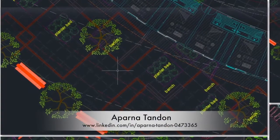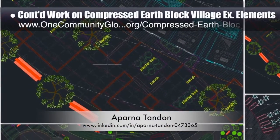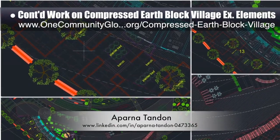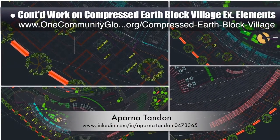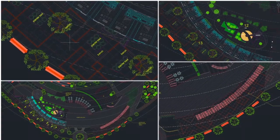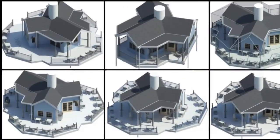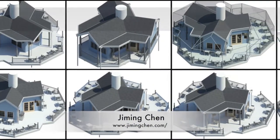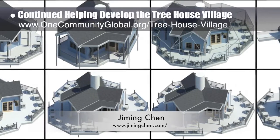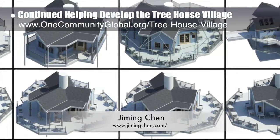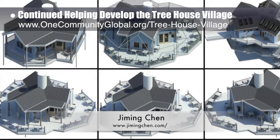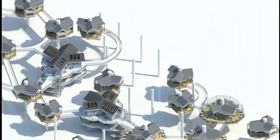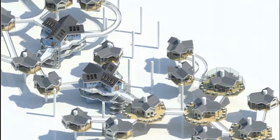Aparna Tandon, architect, continued her work on the compressed earthblock village external elements. This is her 18th week of work, focusing on integrating into the front of the west side similar layout and landscaping details as used in the front of the east side. Jeming Chen, designer with his master's in architecture and BA in engineering, also continued helping develop the treehouse village pod 7. This is his 14th week of work, focusing on 3rd generation renderings of each of the different treehouse structures, plus a 4th generation render of half the complete village.